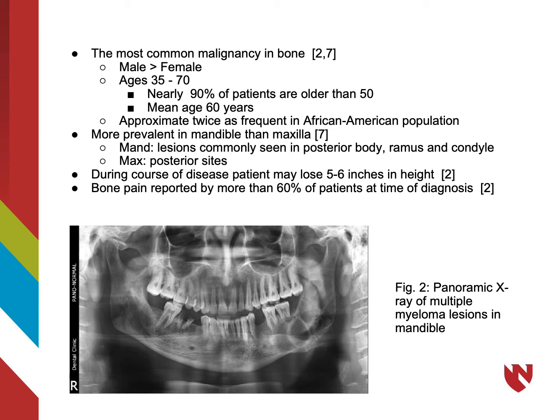As far as the craniofacial region is concerned, multiple myeloma is more prevalent in the mandible than the maxilla. In the mandible, the lesions are commonly seen in the posterior body, ramus, and condyle. In the maxilla, multiple myeloma normally presents in the posterior aspect.